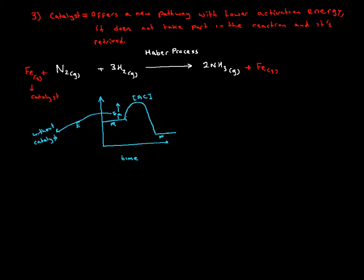Now if iron was introduced, the new pathway is having a lower activation energy. The smaller EA, the faster the reaction. So this is with catalyst, and it's faster.